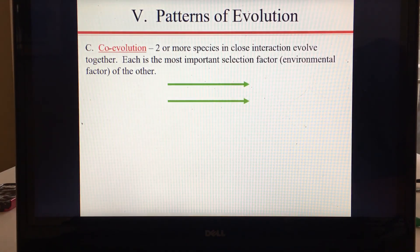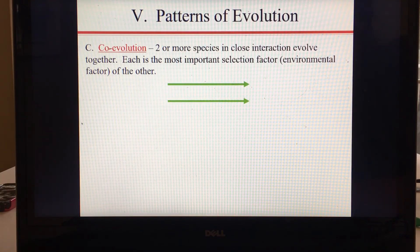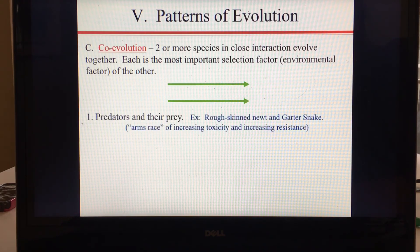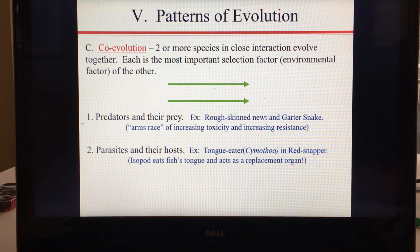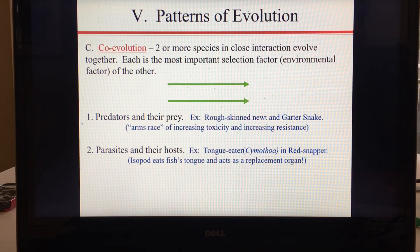Co-evolution is when two or more species in close interaction evolve together, each being an important selection factor for the other. For example, the rough-skinned newt is poisonous and the garter snake eats it. The newt population is evolving to be more and more toxic, while the garter snake population is evolving to become more and more resistant to that toxin.